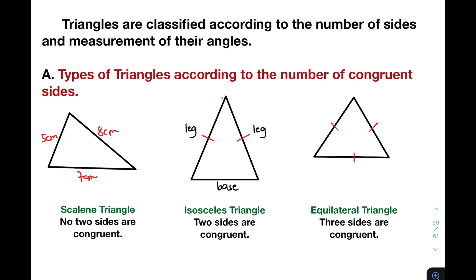Let me give you an example of an isosceles triangle. Let's try using 8 centimeters for this side and 8 centimeters for this leg. Since this one is an isosceles, the other side is different from the two sides. So let's say this is 6 centimeters. Definitely, this one is an example of an isosceles triangle.